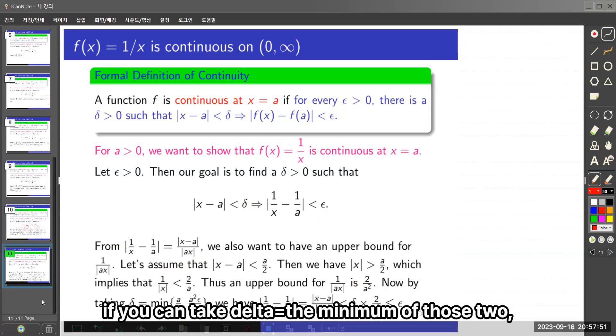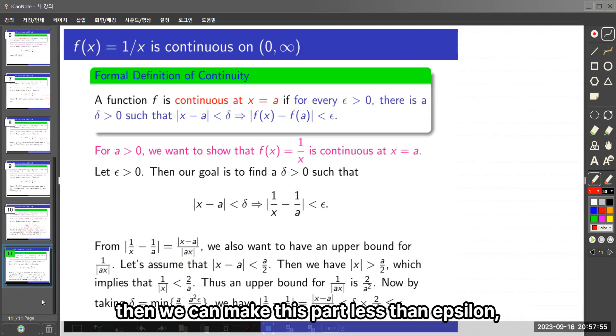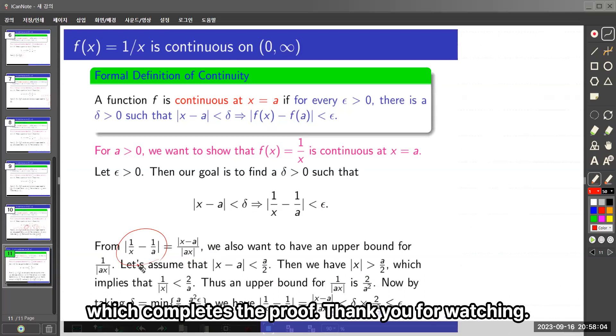but it's okay. If you can take delta as the minimum of those two, then we can make this part less than epsilon, which completes the proof.